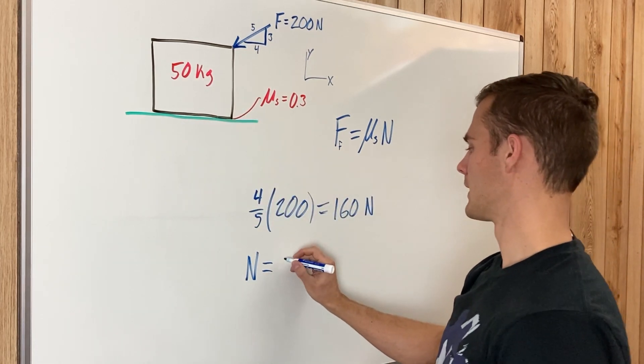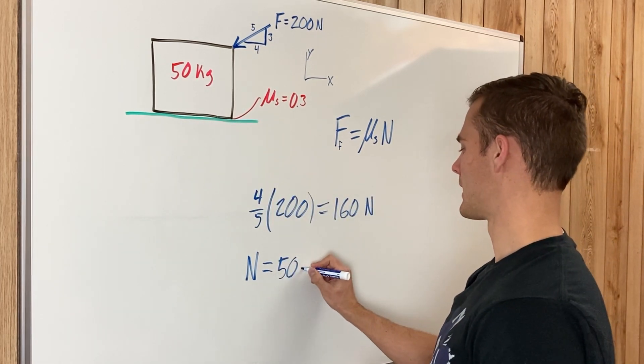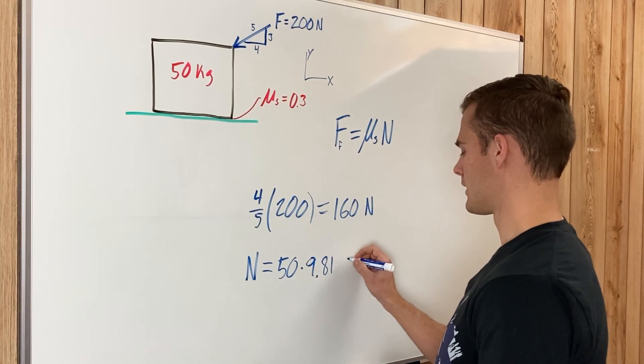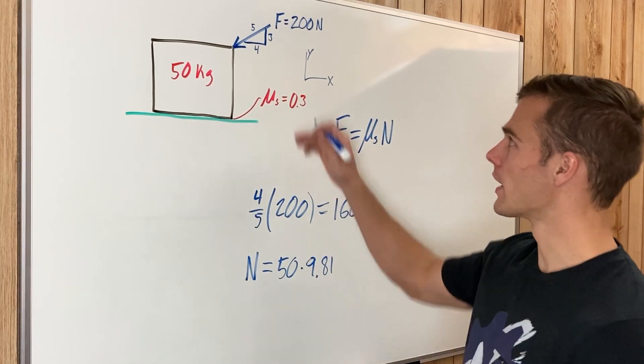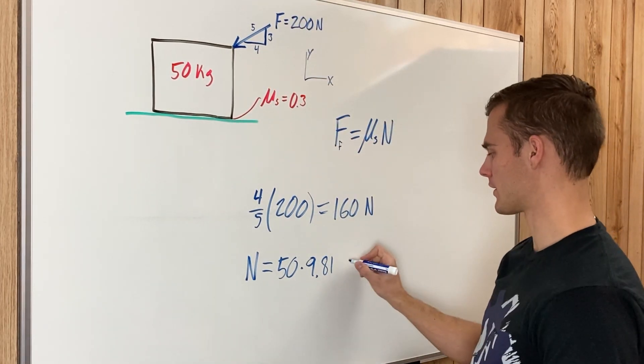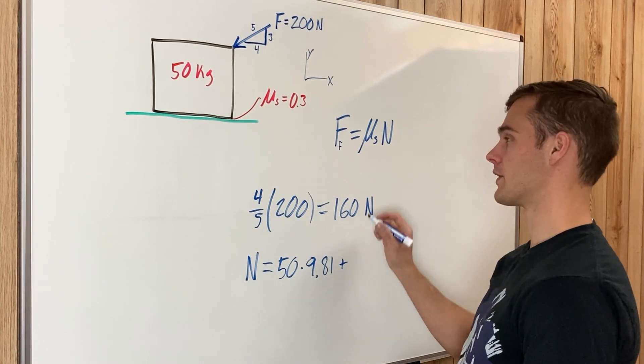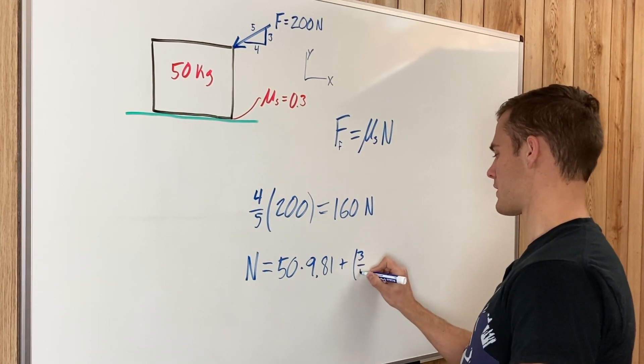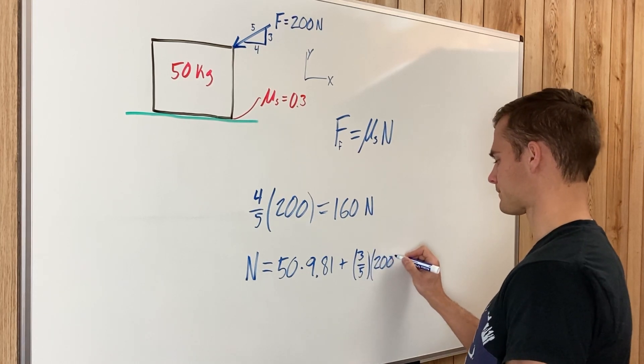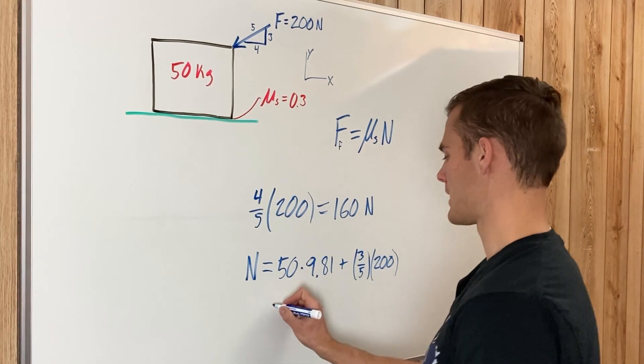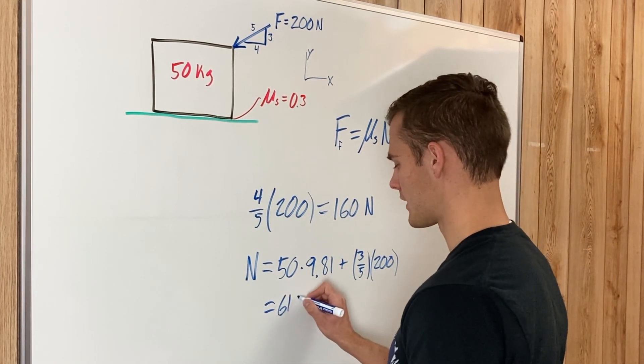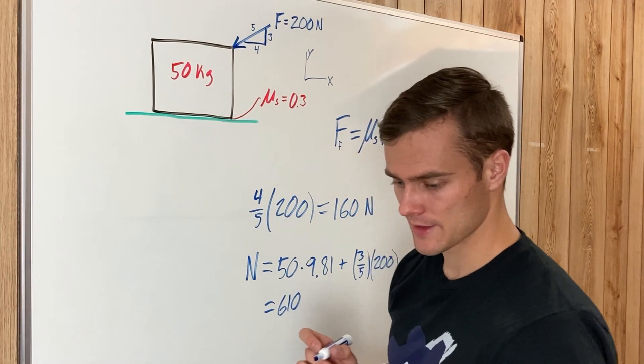It weighs 50 multiplied by the acceleration of gravity, 9.81, but we also have a component of this force that is pushing down on the box, which is going to increase the normal force. That is 3/5 times this 200 newton force. When you multiply that all out, you get that the normal force is 610 newtons.